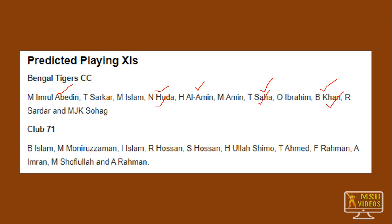From Club 71, Islam is an excellent player — you can select Islam or Shimo, who is another good all-rounder, and Shoifullah who is also a good all-rounder. You will select a 7-4 combination, and after that we will select more players from Club 71. Invest very less for this match because we don't know how the Club 71 players are performing.